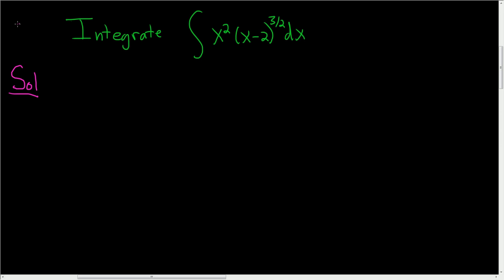In this video we're going to use tabular integration to do an integral. When you're doing tabular, you have to pick one piece to differentiate, and that piece should eventually be zero, and then one piece to integrate.